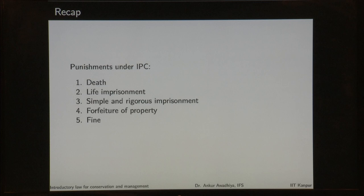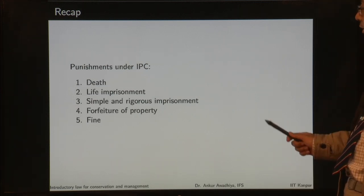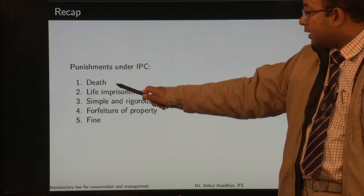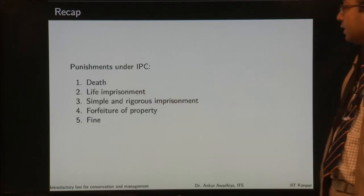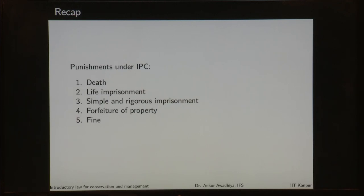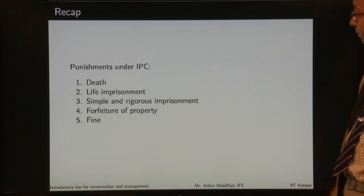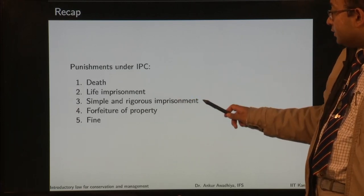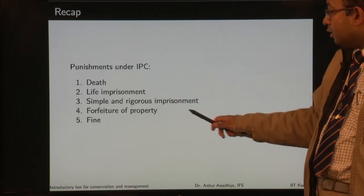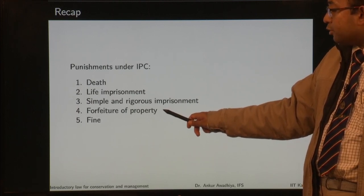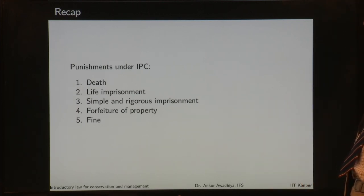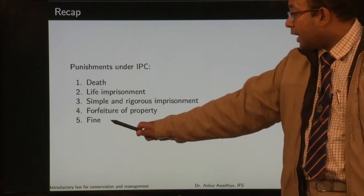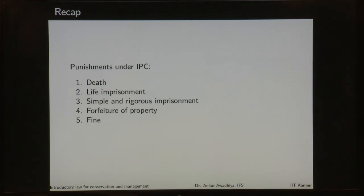To recap, we have 5 kinds of punishments under the IPC. We have the death penalty for the rarest of rare cases, with specified sections for offences for which it may be given. Then we have life imprisonment, simple and rigorous imprisonment, forfeiture of property where absolute forfeiture is not there but forfeiture of specific property is permitted, and fine. These are the 5 different kinds of punishments that the IPC prescribes. That is all for today. Thank you for your attention. Jai Hind.